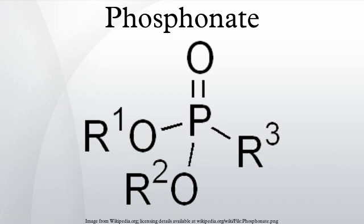Bisphosphonates: bisphosphonates were first synthesized in 1897 by von Baeyer and Hoffman. An example of such a bisphosphonate is HEDP, that is 1-hydroxyethane-1,1-diphosphonic acid, which is prepared from phosphorous acid and acetic anhydride: 2H3PO3 + (CH3CO)2O → (HO)2PO-C(CH3)(OH)-PO(OH)2 + CH3CO2H.